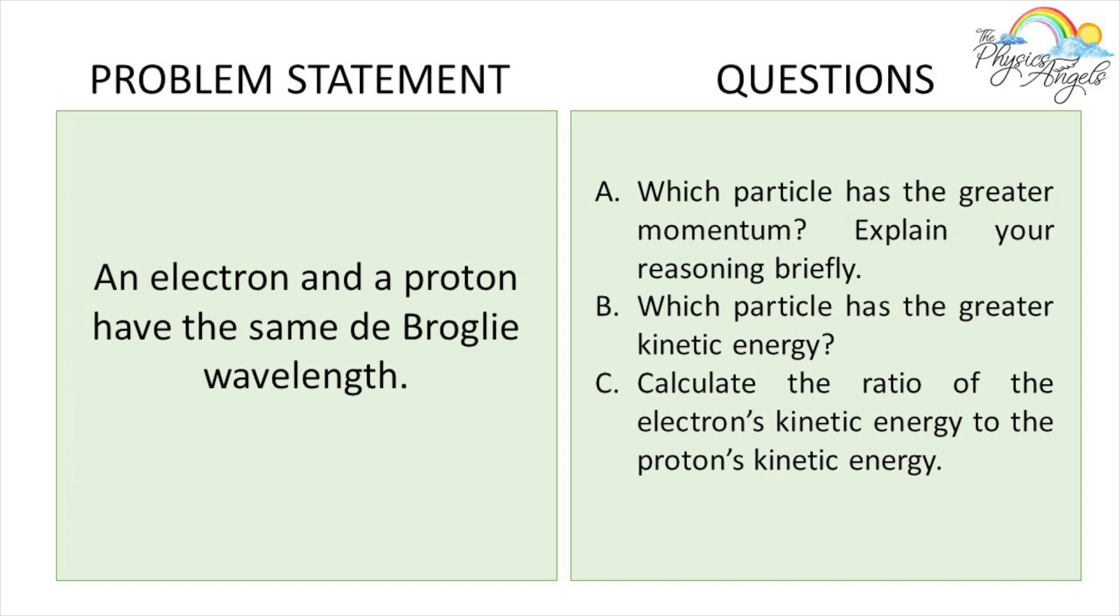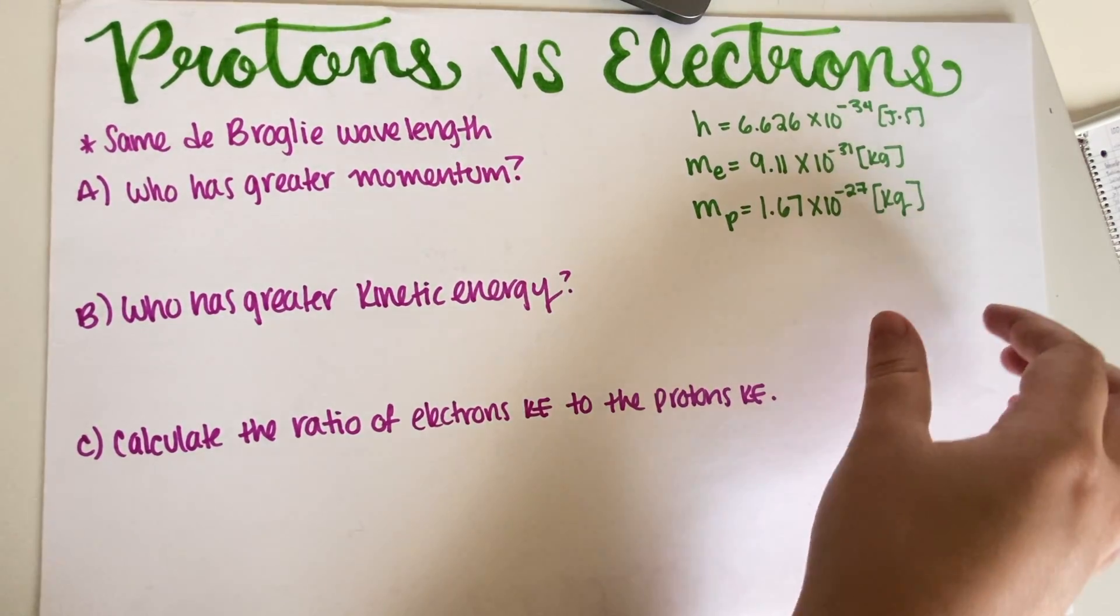So this is a problem we're going to be working with: protons versus electrons. The problem goes as follows: an electron and a proton have the same de Broglie wavelength. Which particle has the greater momentum? Which particle has a greater kinetic energy? And then calculate the ratio of the electron's kinetic energy to the proton's kinetic energy. As you can see, I have everything written down over here.